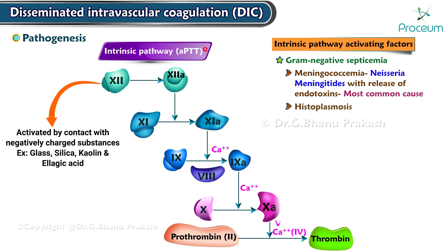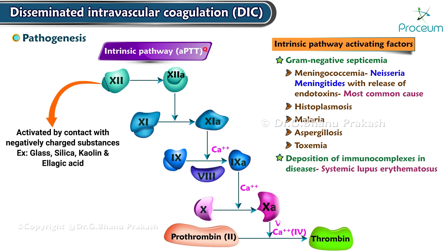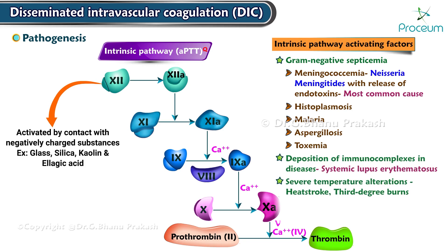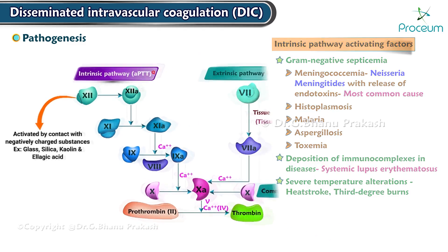Histoplasmosis, malaria, aspergillosis, toxemia, deposition of immune complexes in diseases like systemic lupus erythematosus, severe temperature alterations like heat stroke, and third-degree burns can all lead to activation of the intrinsic pathway.